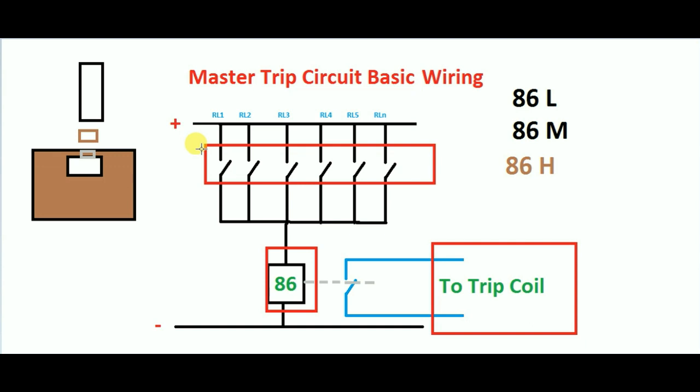If you have a trip circuit supervision circuit, you can always use it. You can use a trip circuit supervision — the 86M is in this case. All of them — DCS, trip circuit supervision, interlace — are also in an auxiliary port. So this is the master trip circuit, and this is a great topic for our power plant.